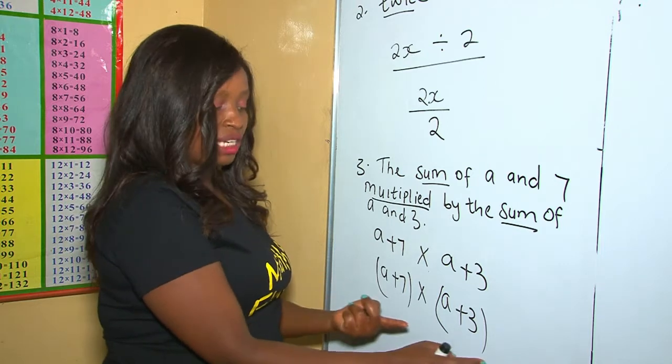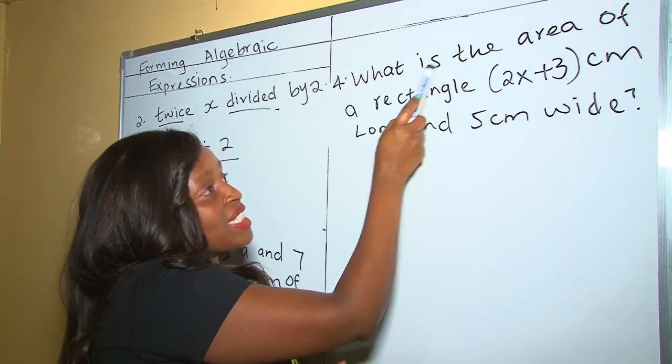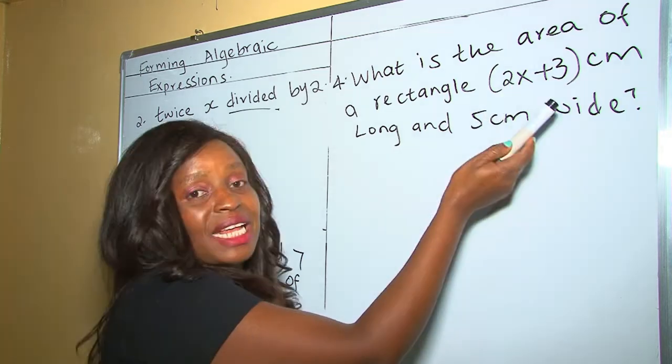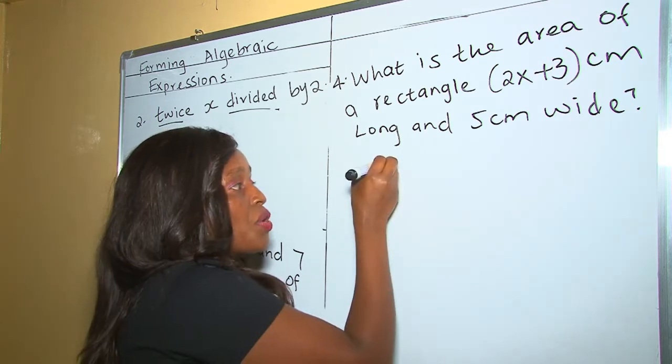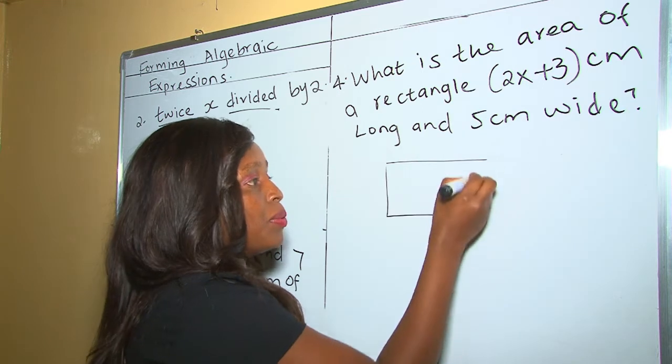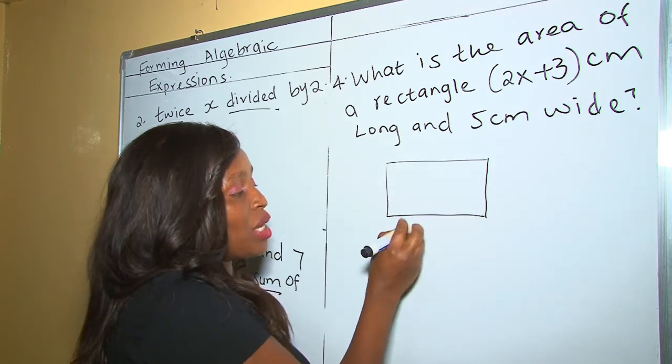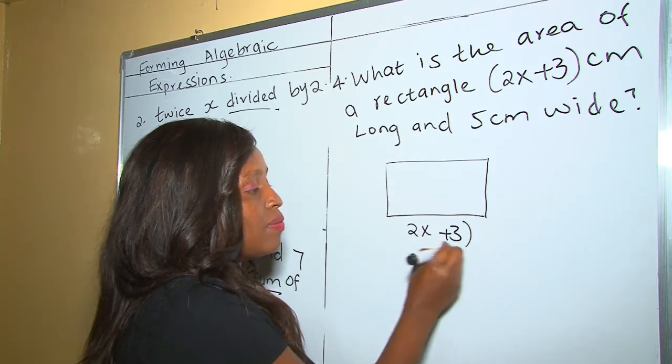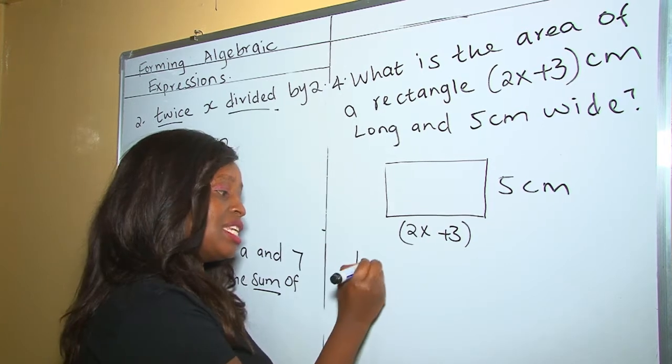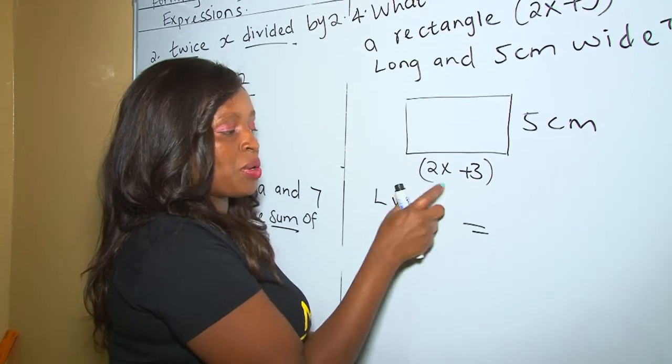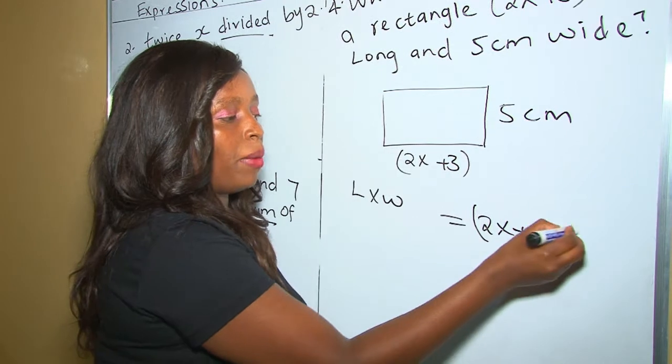In this example, we have been taught, what is the area of a rectangle whose length is bracket 2x plus 3 and whose width is 5 centimeters? We know a rectangle is this kind of a shape. The length is bigger than the width. And this kind of a rectangle, we have been told the length is 2x plus 3, and the width is 5 centimeters. How do we get area of a rectangle? The area of a rectangle is length times width.